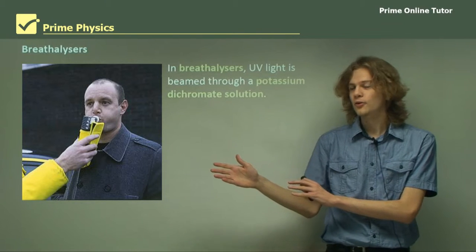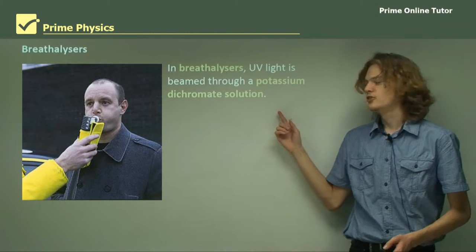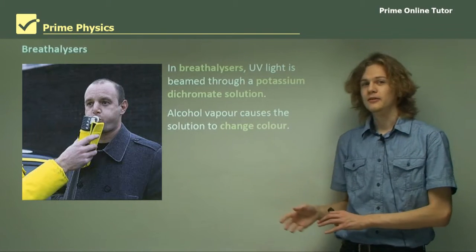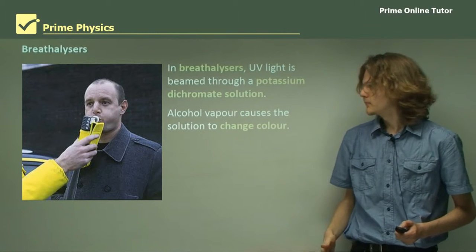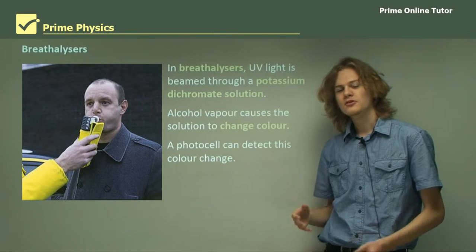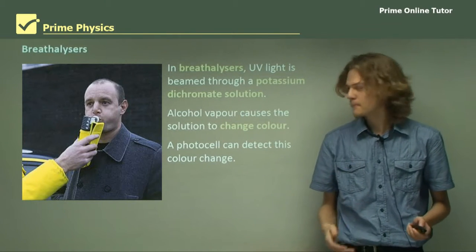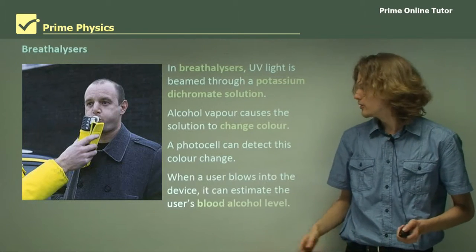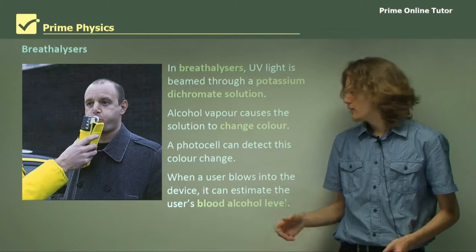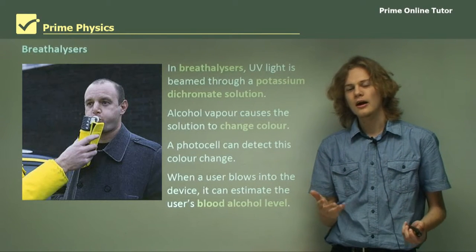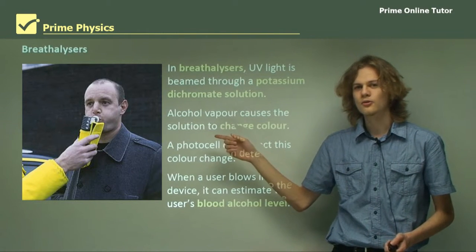Breathalyzers are another use of photovoltaic cells. In breathalyzers, UV light is beamed through a solution called potassium dichromate inside the breathalyzer. Potassium dichromate is very useful because it changes colour when exposed to alcohol vapour — say, in the breath of a person using the breathalyzer. A photocell can detect the colour change because the energy of the photons getting through will be slightly different when the potassium dichromate is a different colour. With a little chip inside the breathalyzer, it can estimate how much alcohol is in the user's blood level.